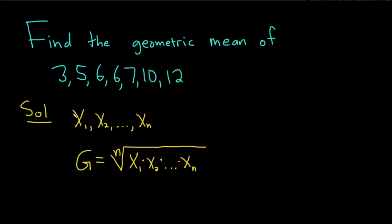So here we have to figure out how many numbers we have. So we have 1, 2, 3, 4, 5, 6, 7. So in our case, it's going to be G is equal to the 7th root of, and then we just multiply all of these numbers. So it'll be 3 times 5 times 6 times 6 times 7 times 10 times 12.